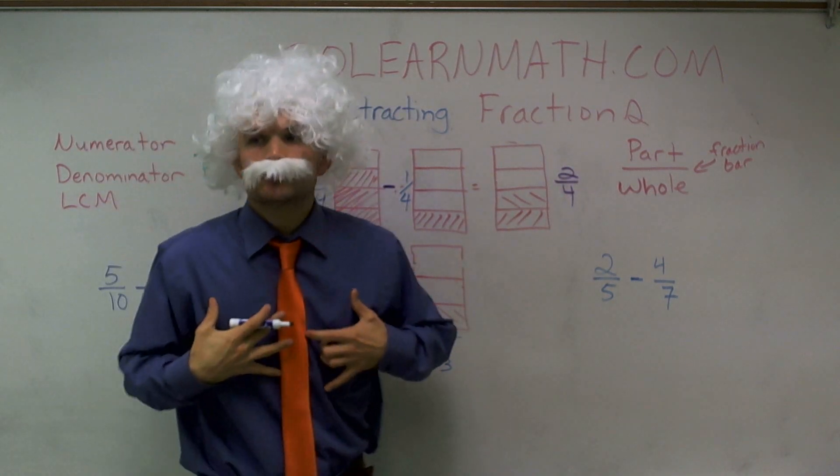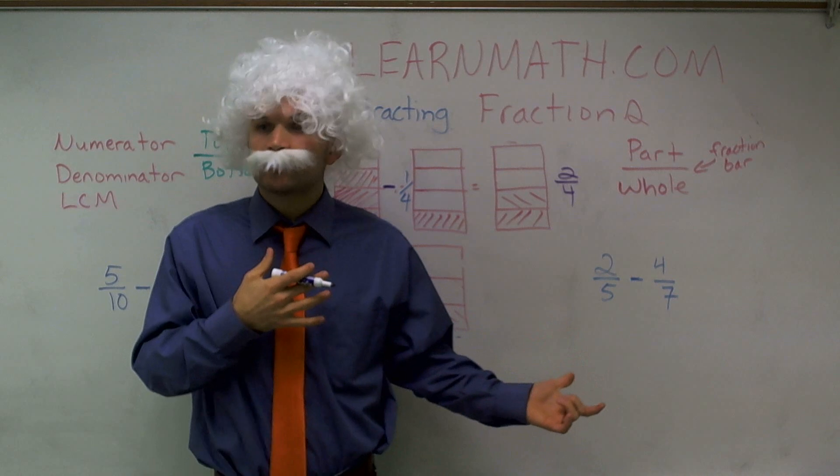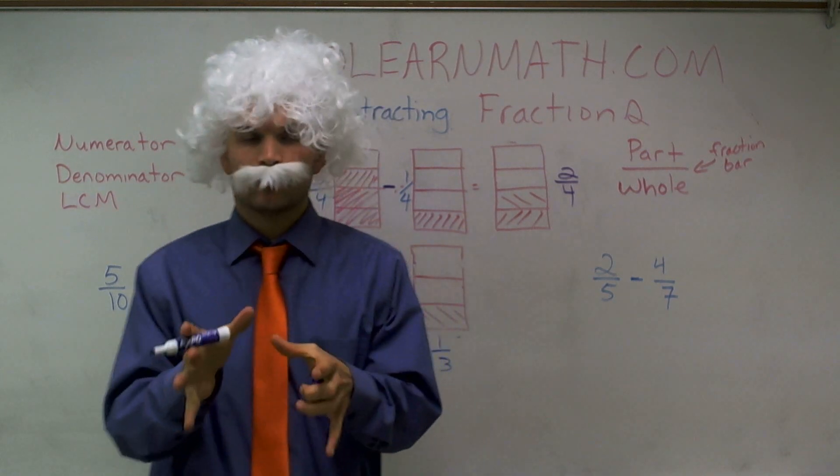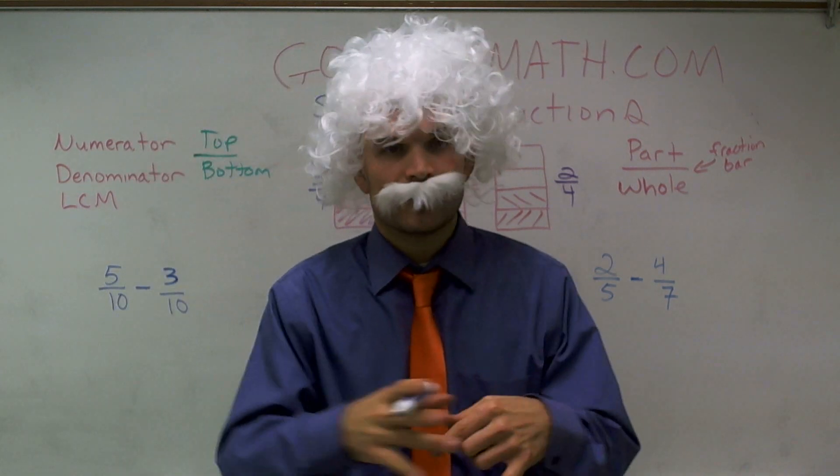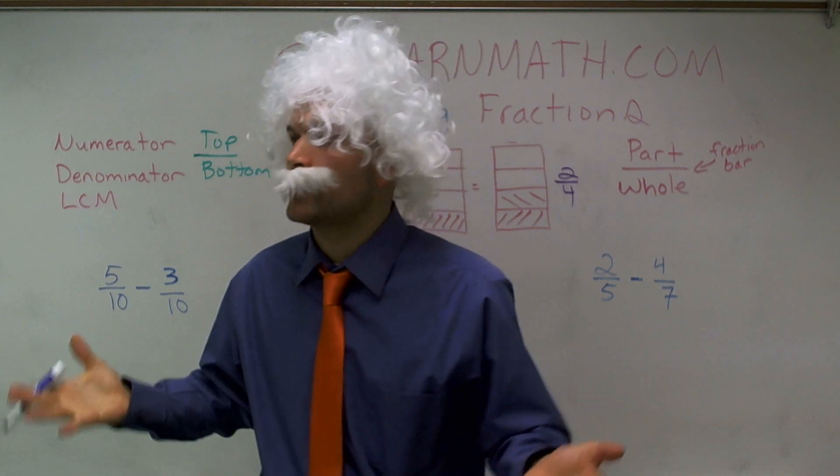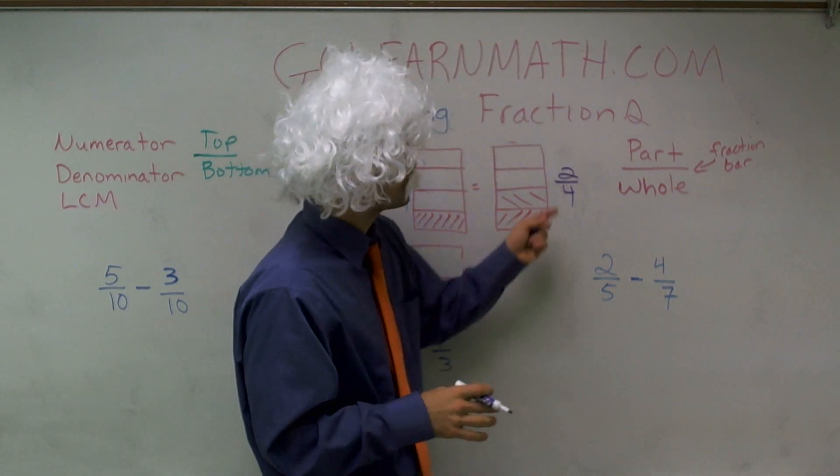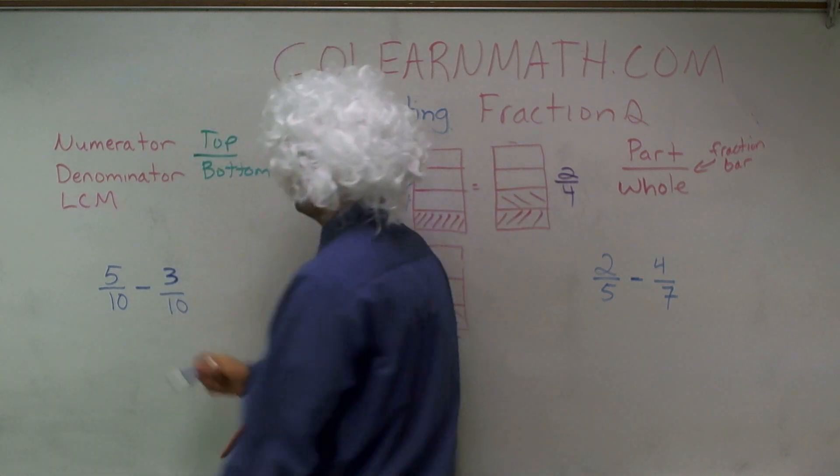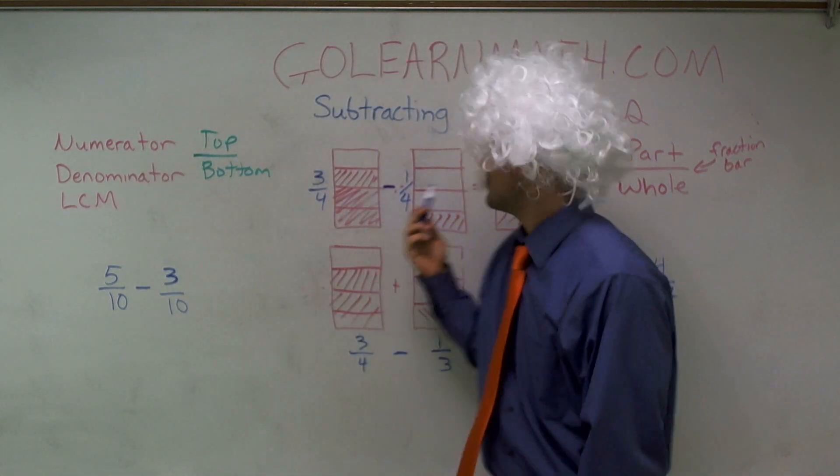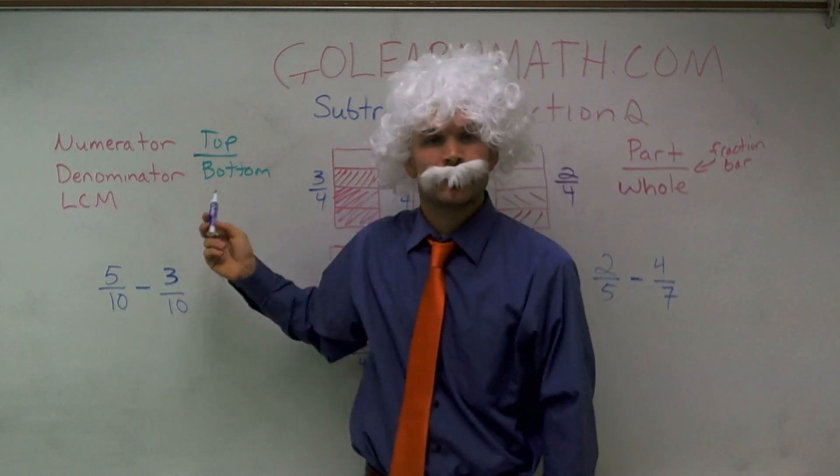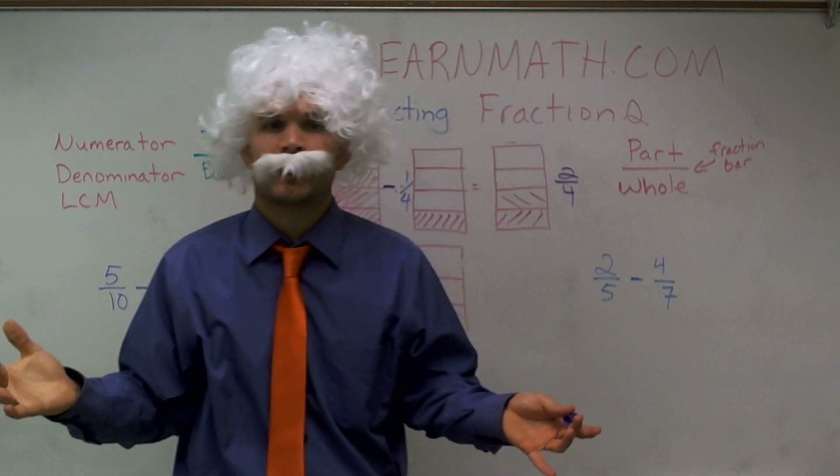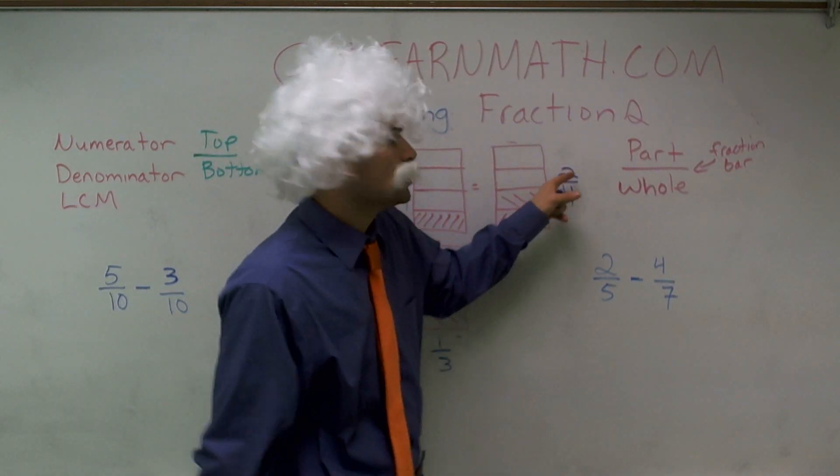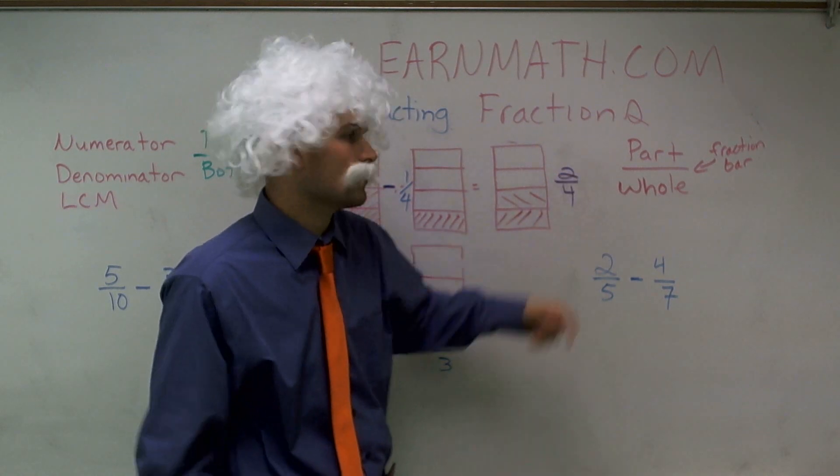So therefore, I'm left with two more pieces out of four in my candy bar. Now, one thing we've got to make sure is whenever we're talking about fractions, we always want to put our fractions in lowest terms. Meaning, can these two numbers, my top number, which we call our numerator, and our bottom number, which we call our denominator, can they be divided by the same number? And you could say yes. Two can go into two, and two can go into four.